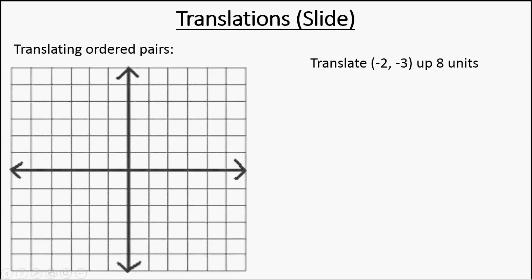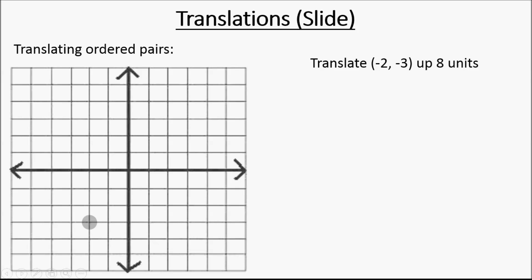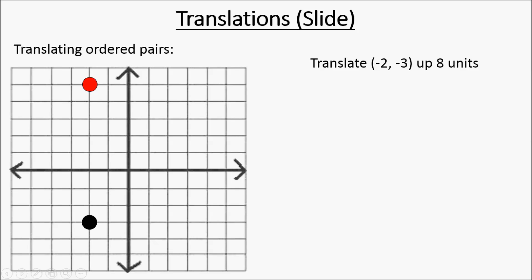Now some kids are going to want to get a piece of graph paper out and draw a coordinate plane, draw the point negative two, negative three, and then just with their finger count up eight units, and then draw the new point. And that's fine, but there is a different way to do it.